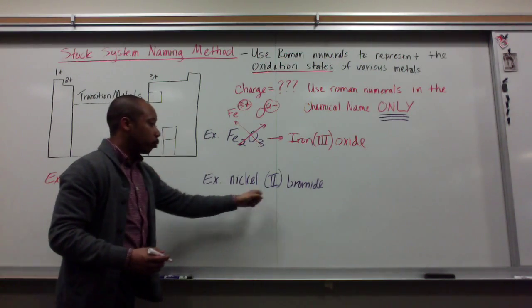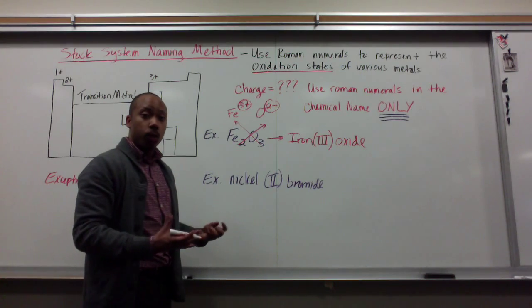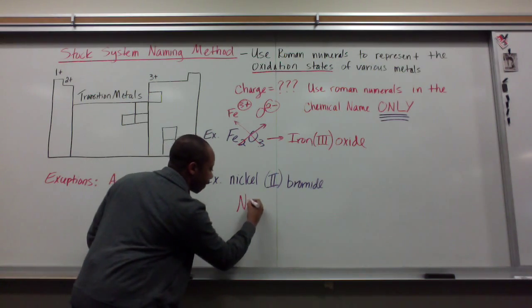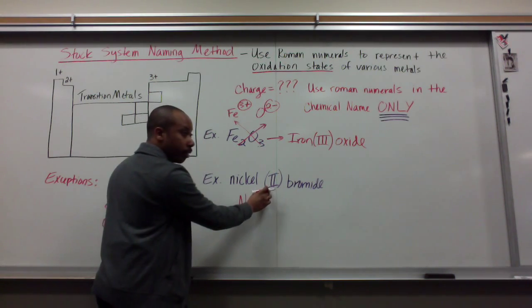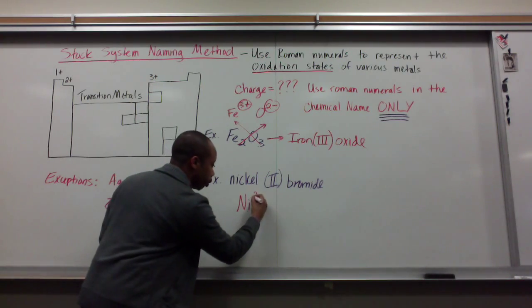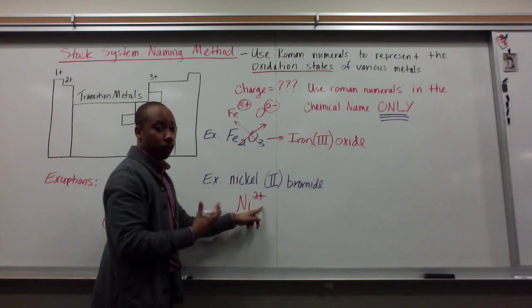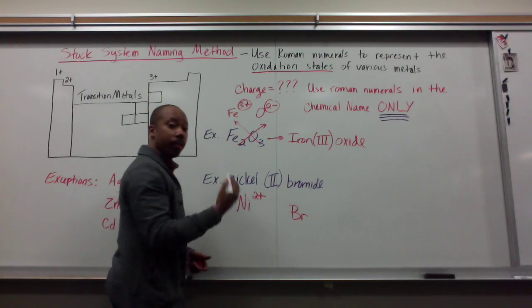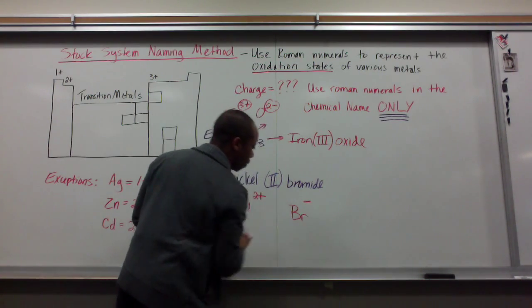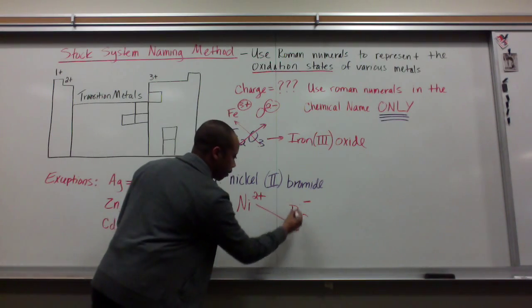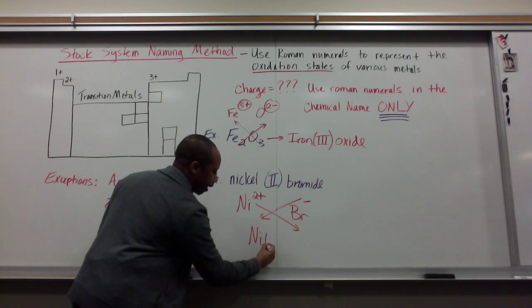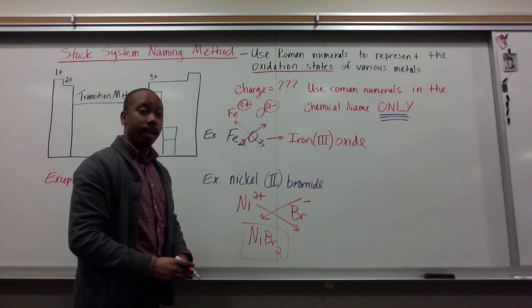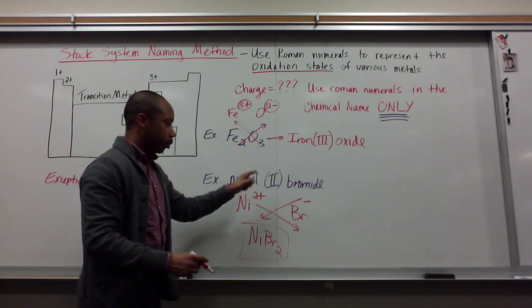And if I have a name, like nickel 2 bromide, I can deduce what the oxidation state of nickel is from my Roman numeral. Nickel is Ni. 2 stands for its oxidation state or its charge. Nickel 2 plus. It's going to be positive again because metals form cations. Bromide, we know bromine is Br. It's in group 7A. It's going to gain one valence electron and become Br minus. I do my crossover method. I get NiBr2. That would be nickel 2 bromide. And you would say it that way. Nickel 2 bromide. Not nickel bromide, but nickel 2 bromide.